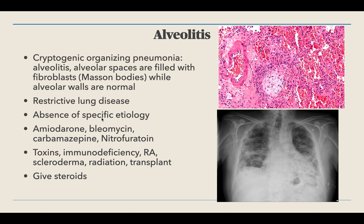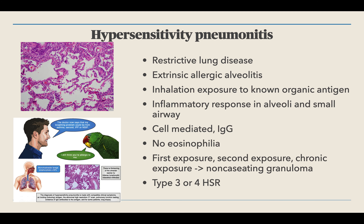Cryptogenic organizing pneumonia is a restrictive lung disease because the problem lies within the alveoli. There is an absence of specific etiology — we don't really know what causes it, so it's a diagnosis of elimination. In some cases it can be associated with certain medications, toxins, immunodeficiencies, rheumatoid arthritis, and scleroderma, though it's still considered idiopathic. Treatment is steroids.